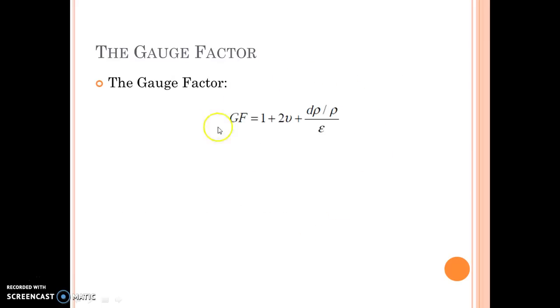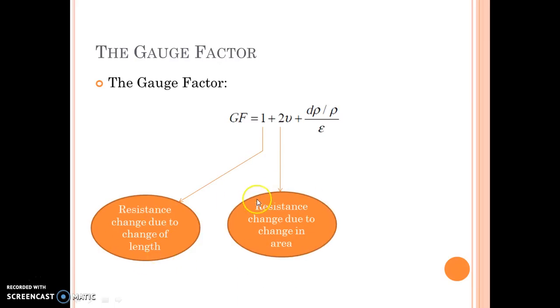This is the final formula for strain gauge whereas this factor is because of resistance change due to change of length. This is because of resistance change due to change in area and this is because resistance change due to piezoresistive effect.